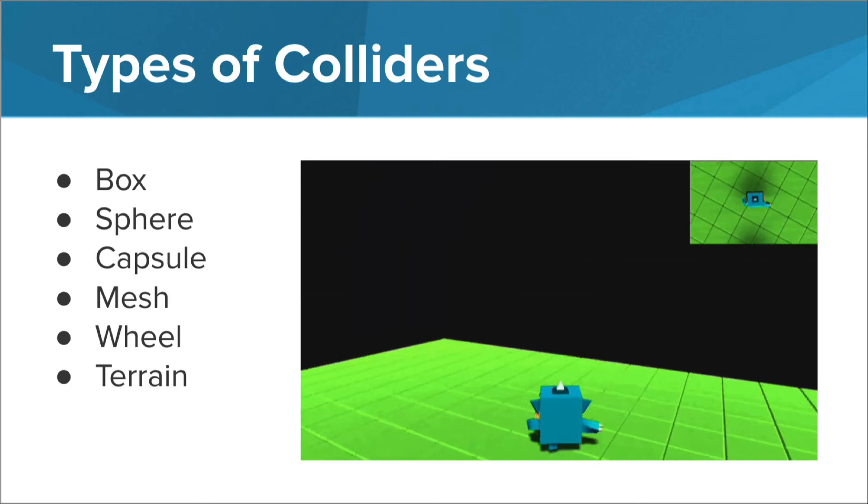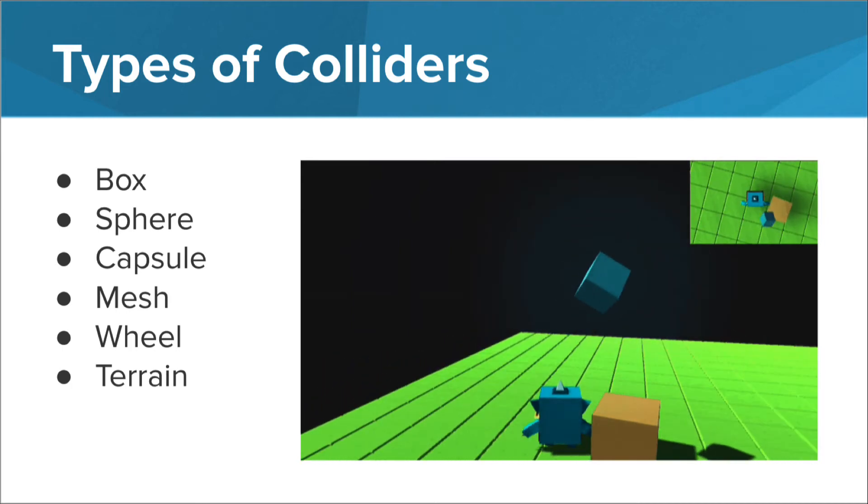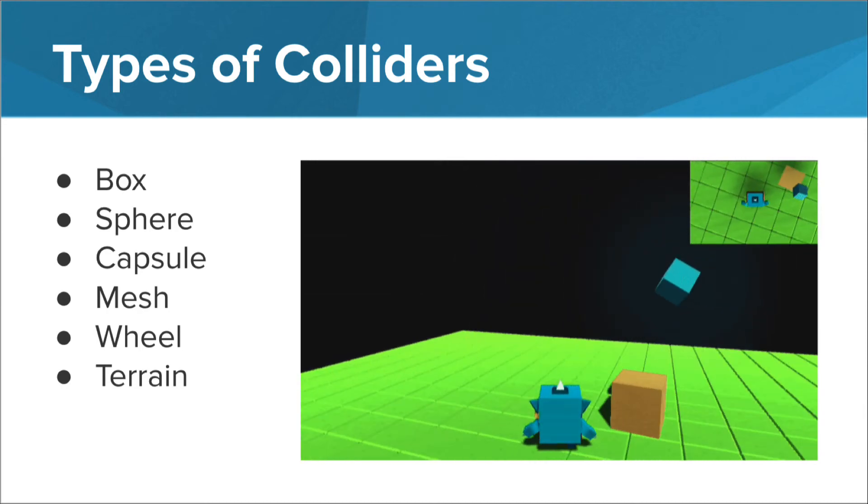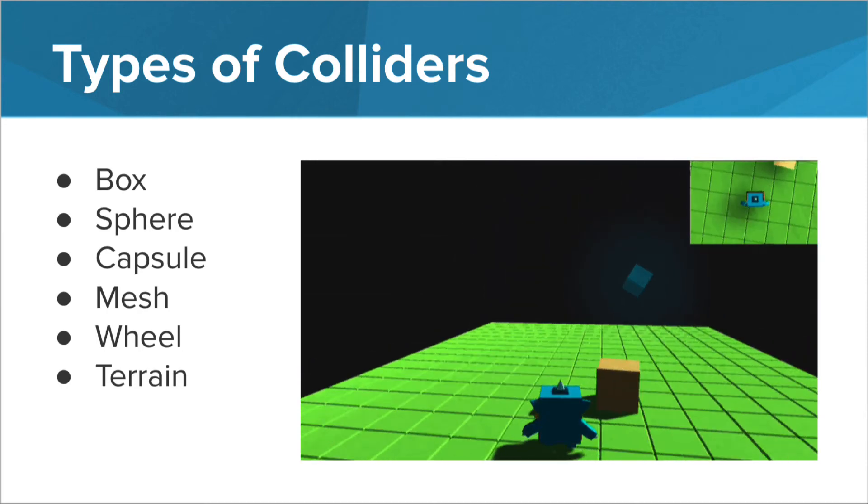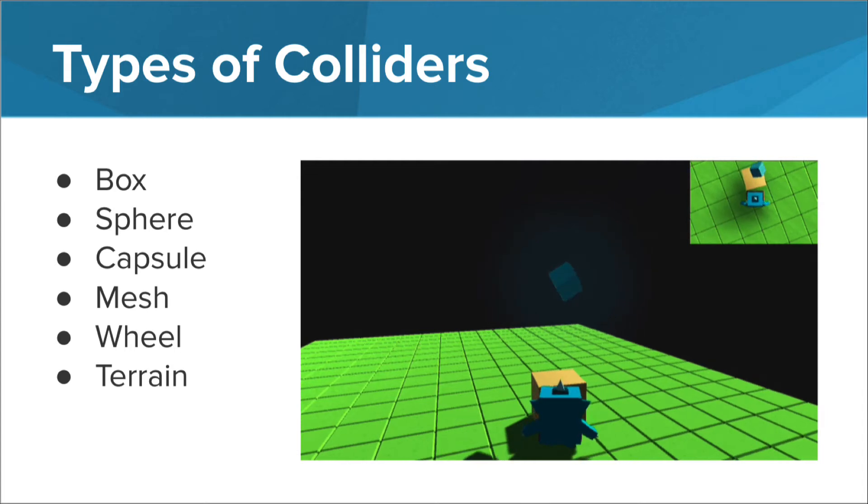Wheel colliders are a special type of collider used to control the movements of wheels and gears, typically for wheels on a vehicle. Terrain colliders can be used for special terrain surfaces.